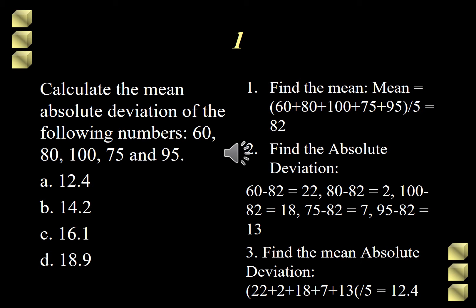For our first question, it says here, calculate the mean absolute deviation of the following numbers: 60, 80, 100, 75, and 95. Choices are A, 12.4, B, 14.2, C, 16.1, and D, 18.9.